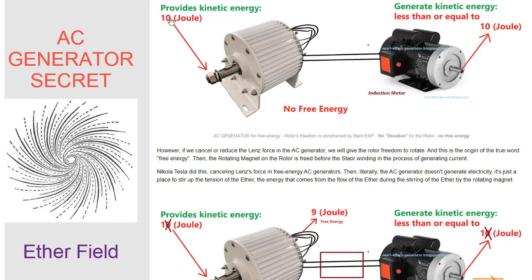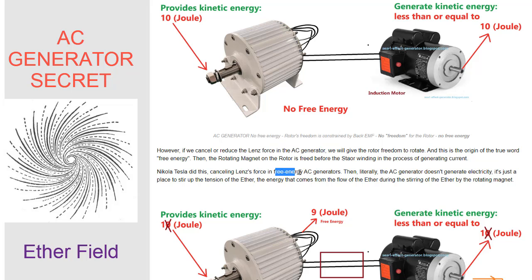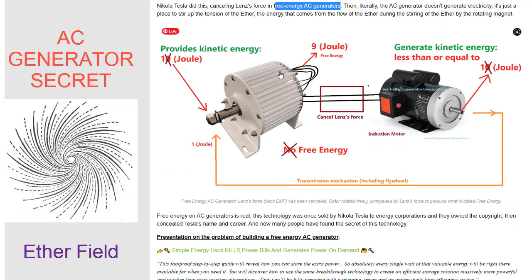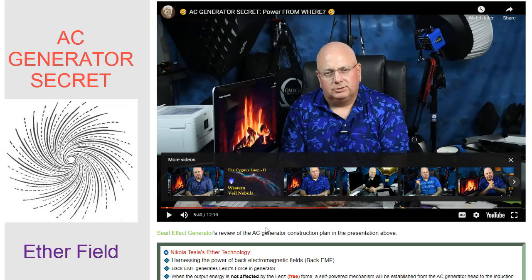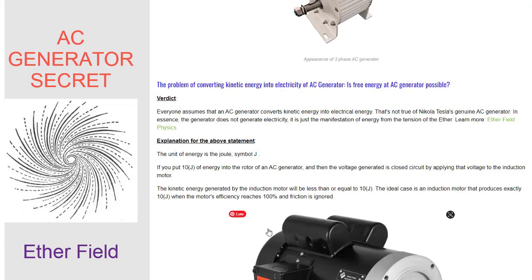If you are looking for a way to generate free energy, then you may be interested in the AC generator. This is a device invented by Nikola Tesla, based on the principle of using a rotating magnet to stir the ether. The AC generator works by taking advantage of the fact that when a magnet is rotated, it creates a current in the surrounding ether, which can then be harnessed to generate electricity. The beauty of the AC generator is that it can generate electricity without any input of fuel or other forms of energy — all you need is a source of rotation, such as a windmill or water wheel.